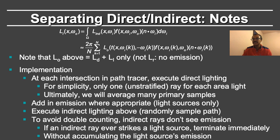The implementation is actually quite straightforward. At each intersection in the path tracer, you execute the direct lighting. For simplicity, you only send one unstratified ray for each area light. This will get summed up when you have multiple paths through the pixel, and therefore will remove the noise in direct lighting. A fancier approach would be to stratify at the first bounce or completely separate direct and indirect, but this is an easy approach. Add in the emission where appropriate — that applies only to light sources — so you will be adding the emission component to the direct component.